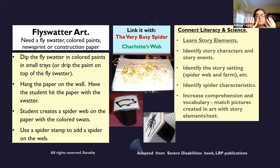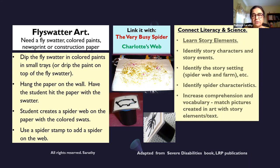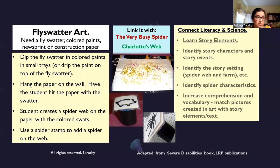One of the first ideas is connecting stories we routinely use — like 'The Very Busy Spider' with a younger child, or 'Charlotte's Web' at the elementary level — with art. So I thought of something called flyswatter art. What you need is a flyswatter, some colored paints, and newsprint or construction paper. The student can use a flyswatter, or if they have motor difficulties, you can attach it to a velcroed glove.